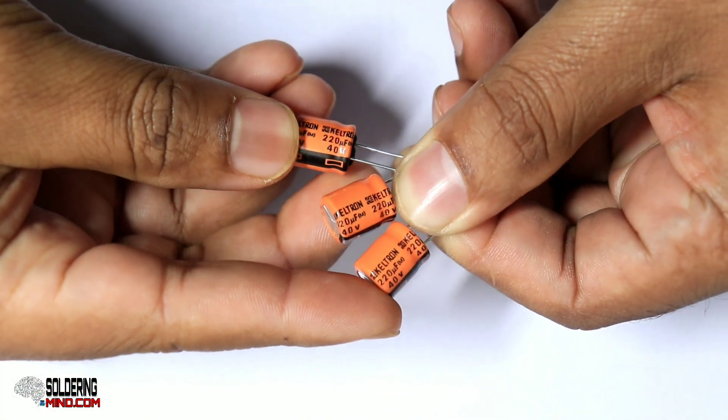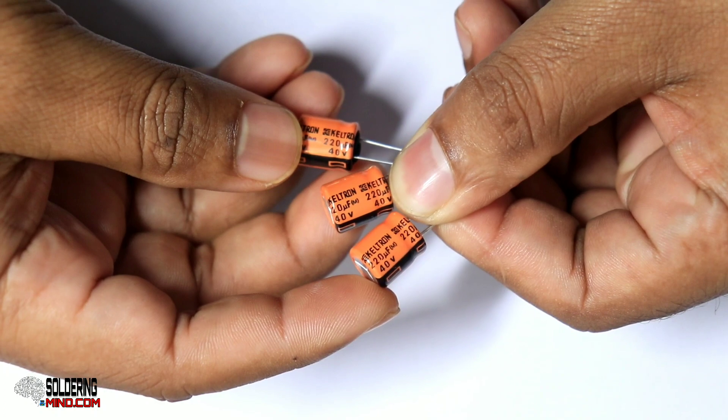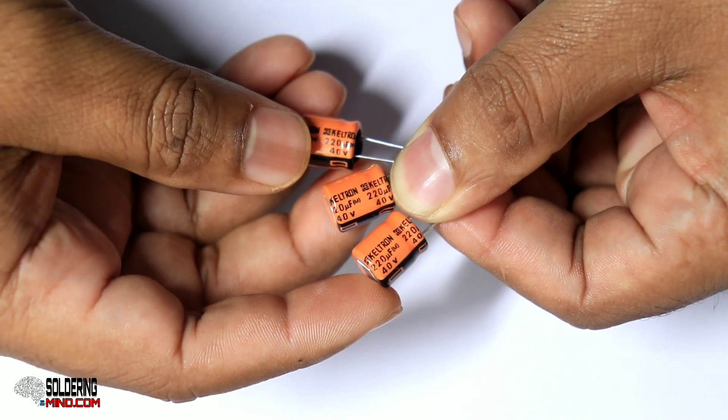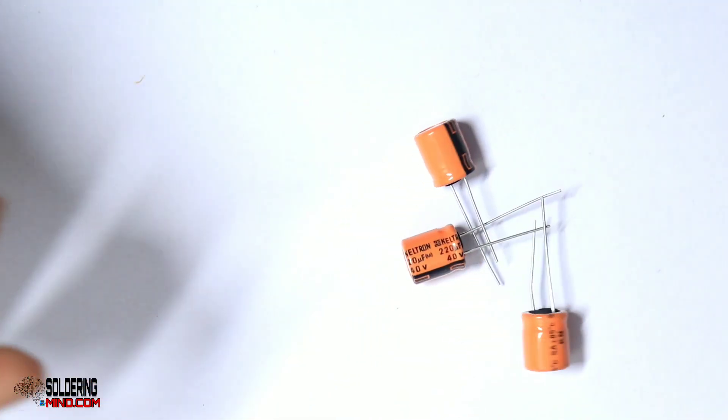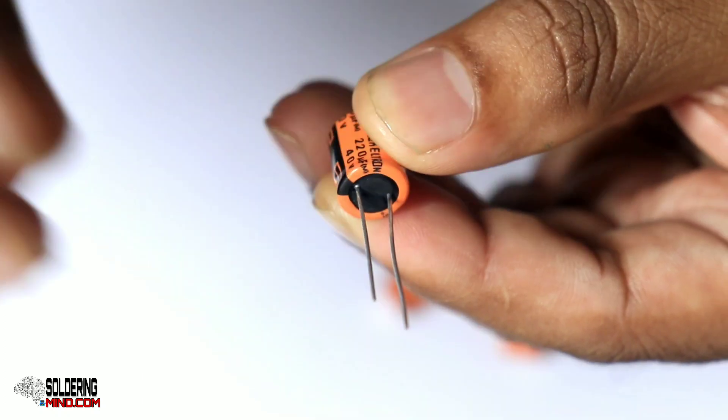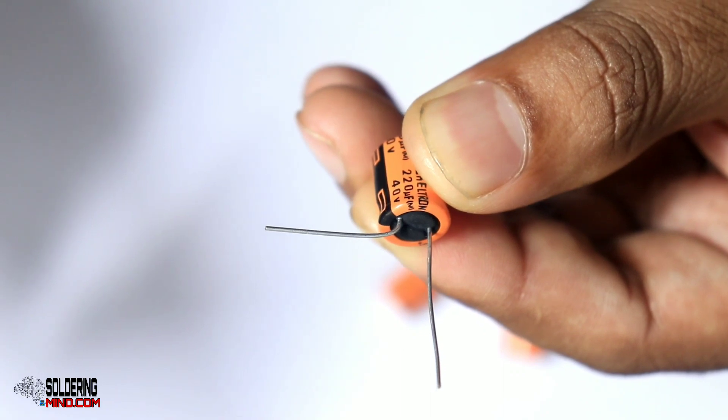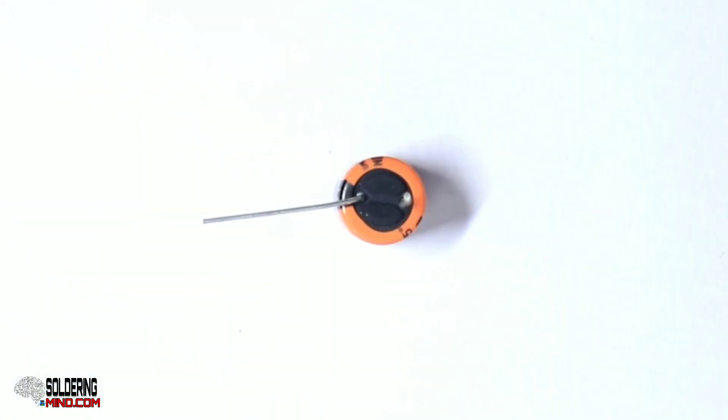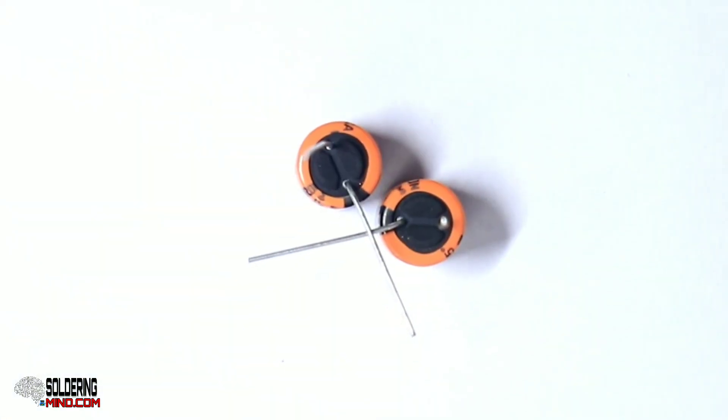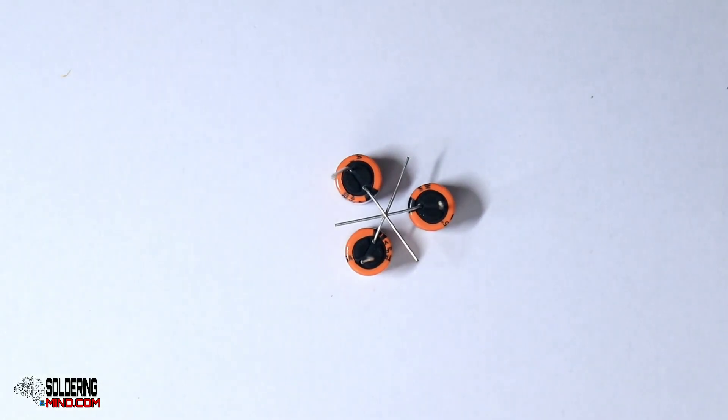First of all, you need to buy three 220 µF 40 volt capacitors. Slightly bend the negative polarity of the capacitors. Solder the common negative polarity together.